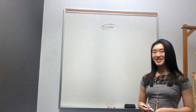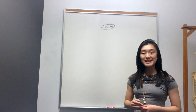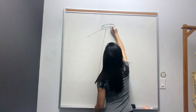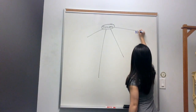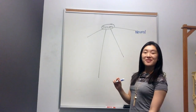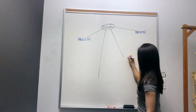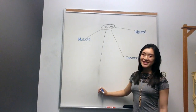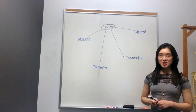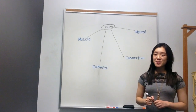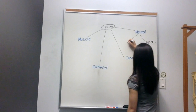Those are the structural levels of organization. Moving back to tissues, we have four categories: neural tissue, muscle tissue, connective tissue, and epithelial tissue. We'll write out all four and then elaborate on each one.